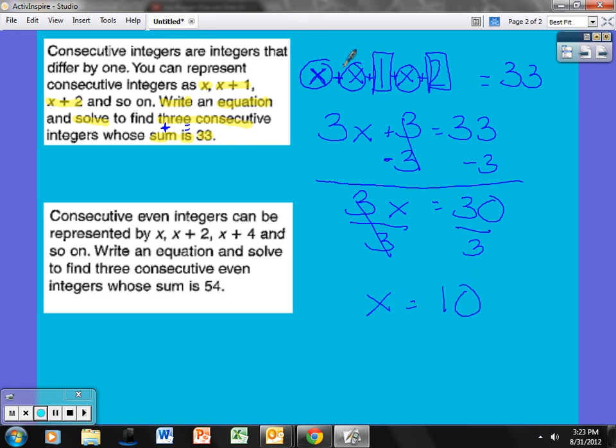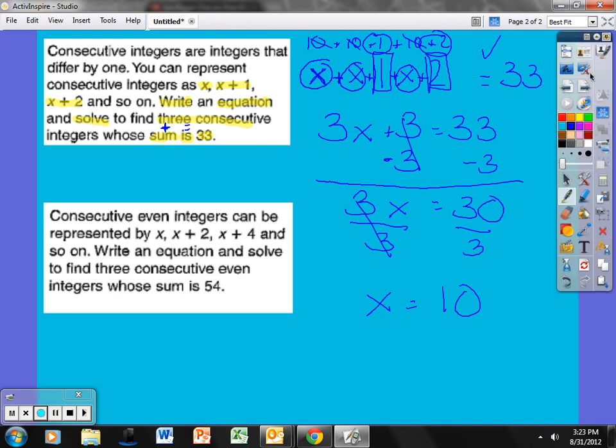If I want to try to substitute that in, I now have 10 plus 10 plus 1 plus 10 plus 2. 10, 10, 10, since it's all addition, it doesn't add to the order, it's commutative. That's 30. 30 plus 1 is 31. Plus 2 is 33. 33 checks 33. I'm going to erase this so I have some room to solve my next problem.